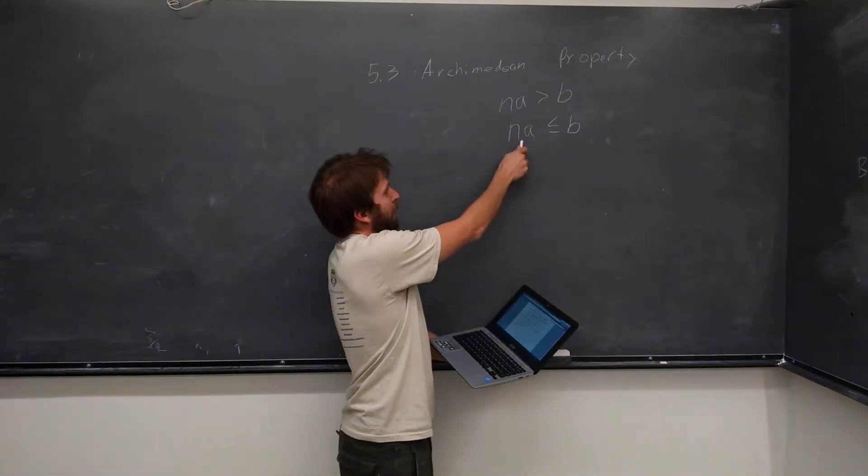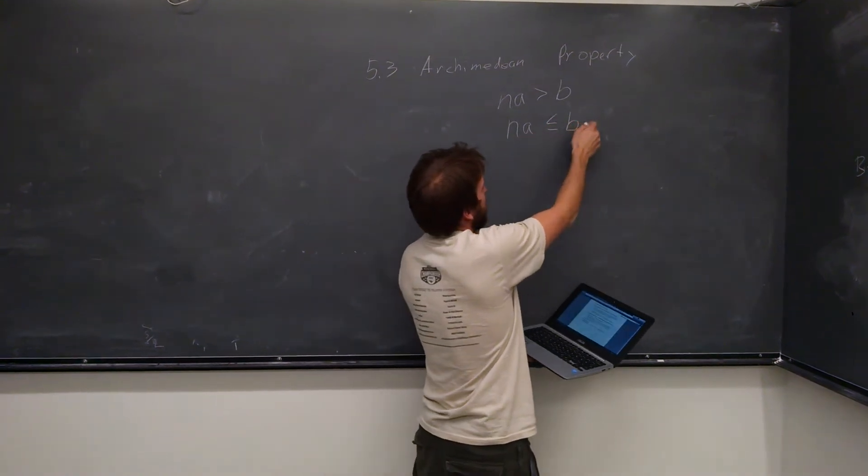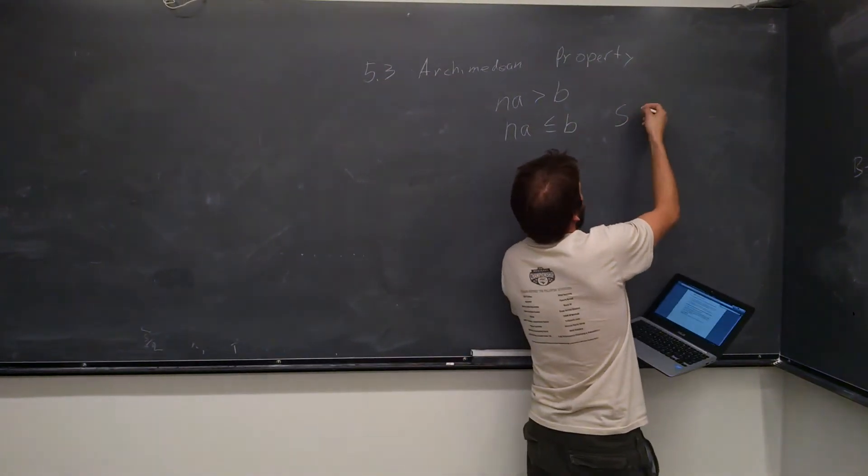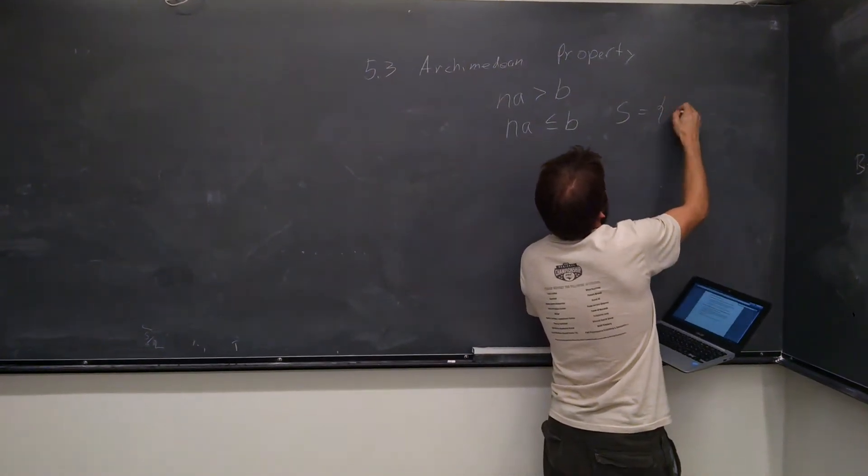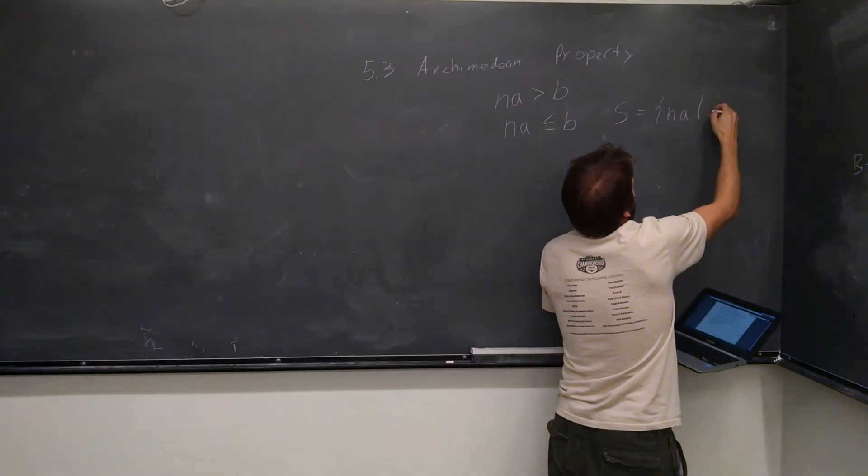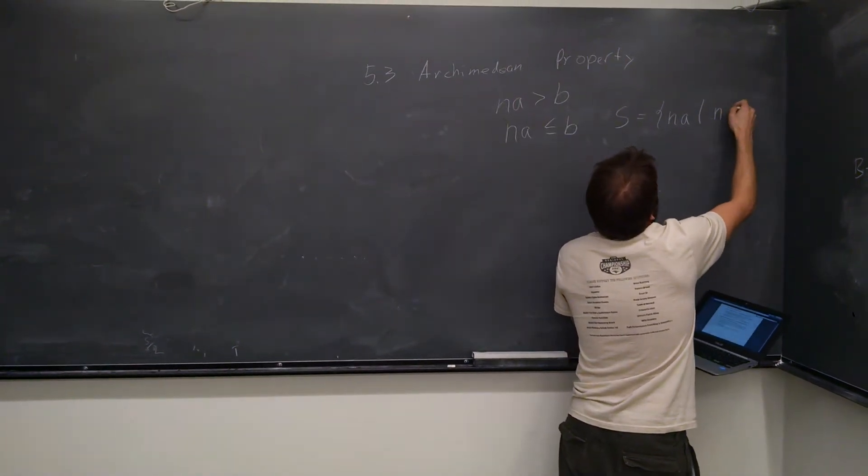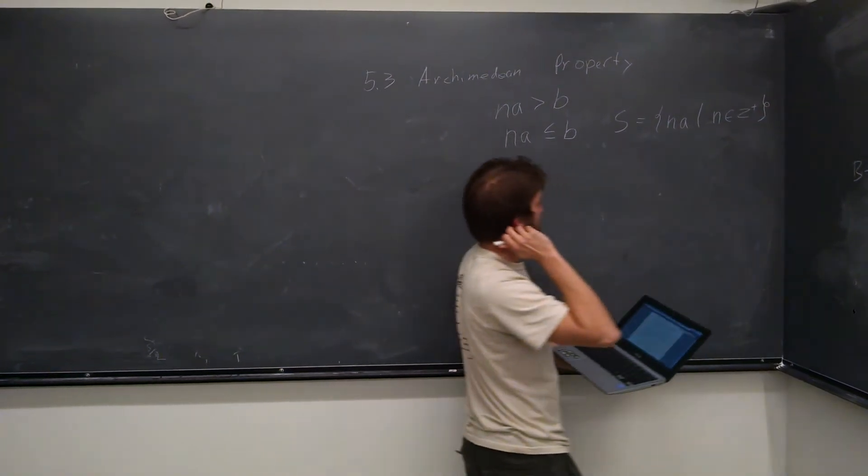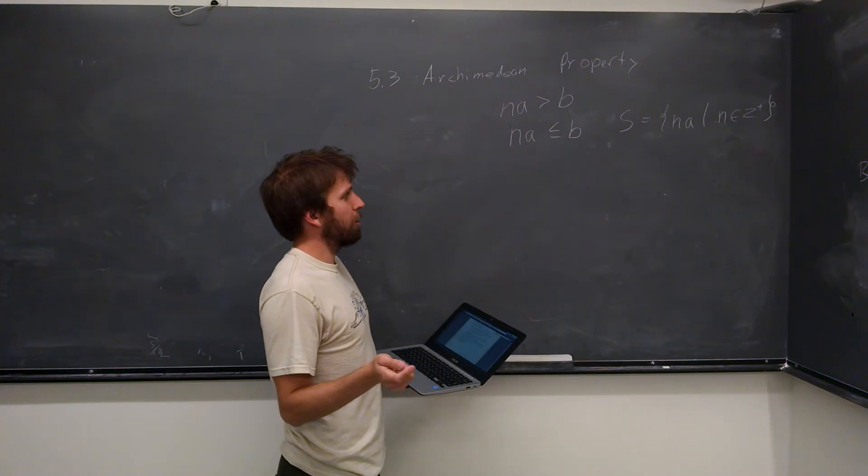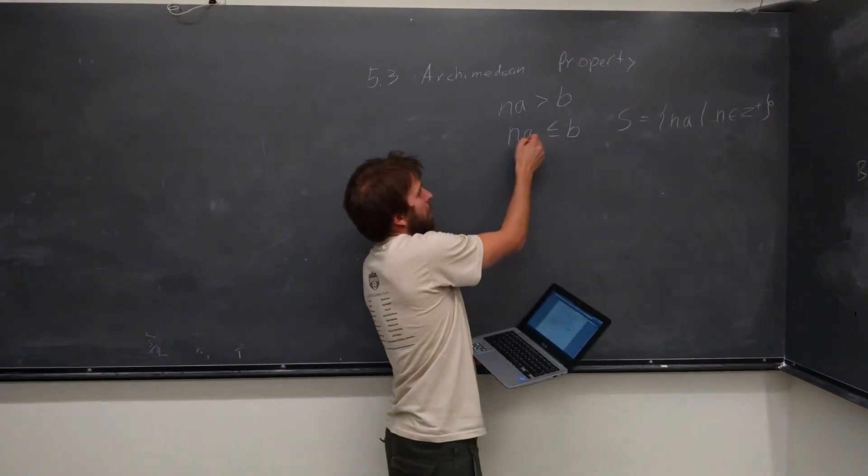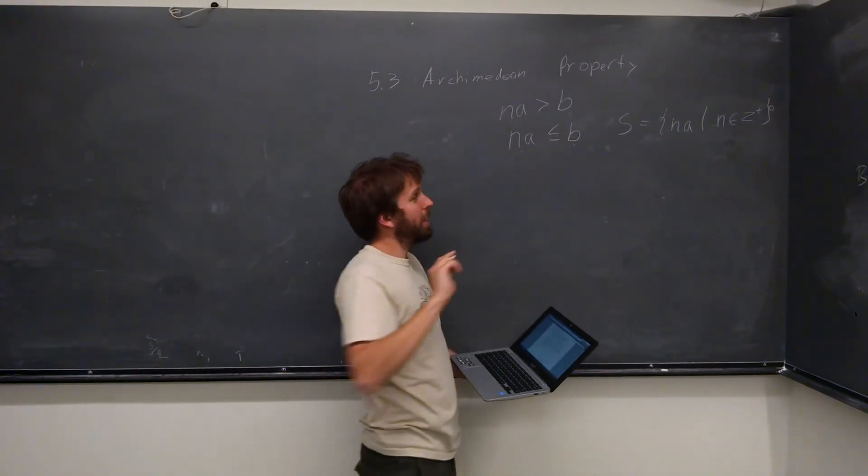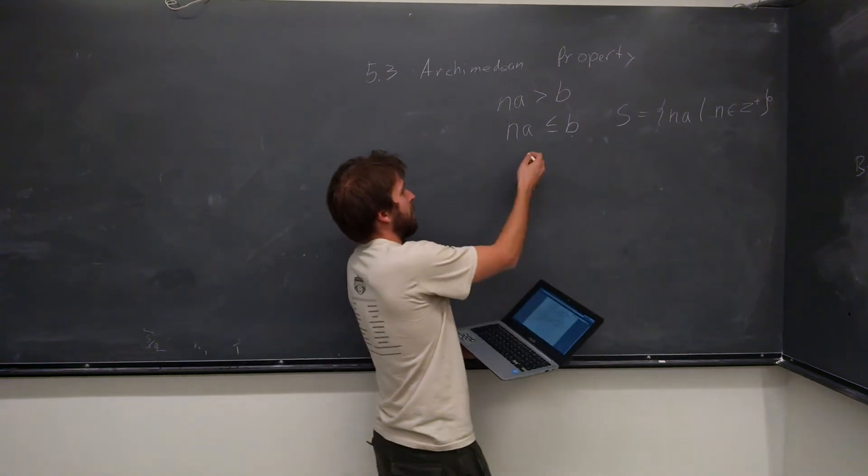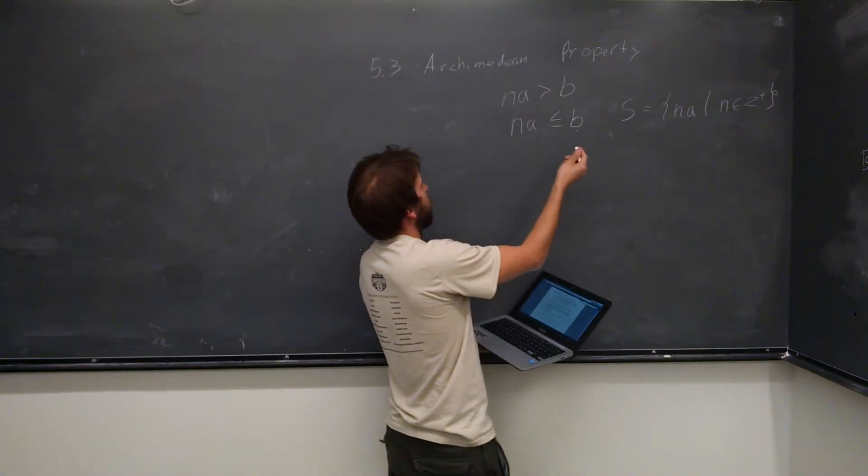So we're going to start off with N times A is less than or equal to B. We're defining S as the set of N times A such that N is an element of positive integers. Because N times A is less than or equal to B, we know that it is bounded above.